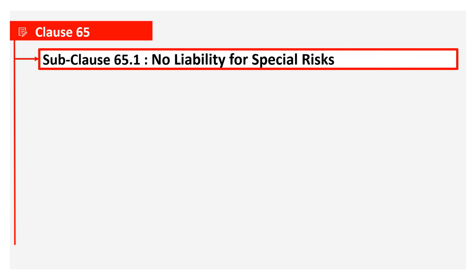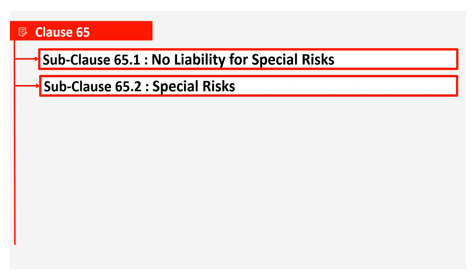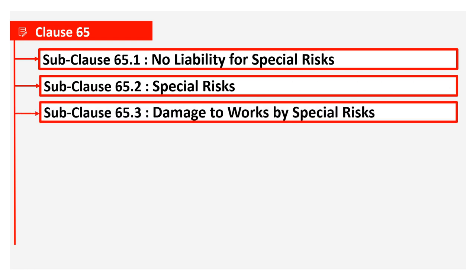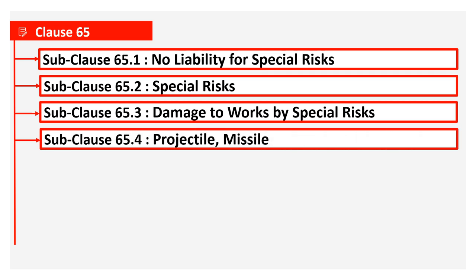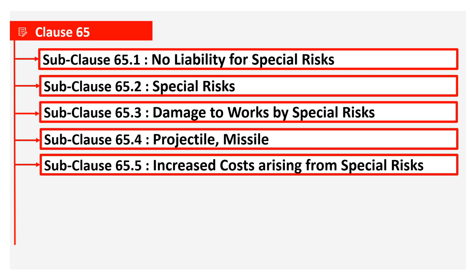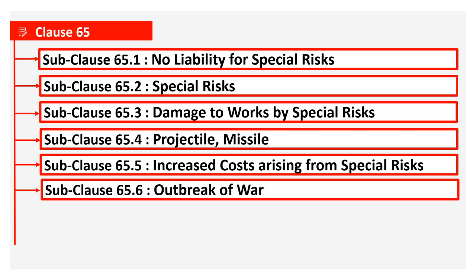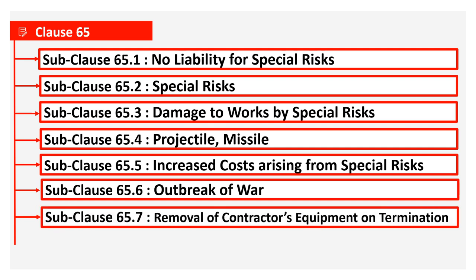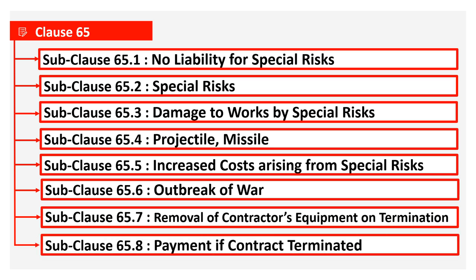Clause 65 contains the following eight sub-clauses: 65.1 No Liability for Special Risk; 65.2 Special Risk; 65.3 Damage to Works by Special Risk; 65.4 Projectile and Missile; 65.5 Increased Cost Arising from Special Risk; 65.6 Outbreak of War; 65.7 Removal of Contractor's Equipment on Termination; and 65.8 Payment if Contract is Terminated.